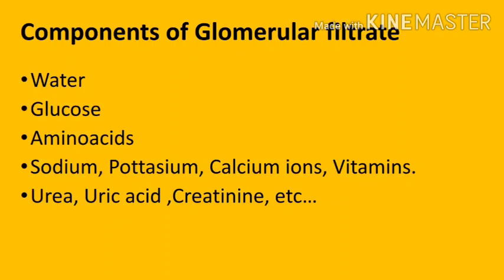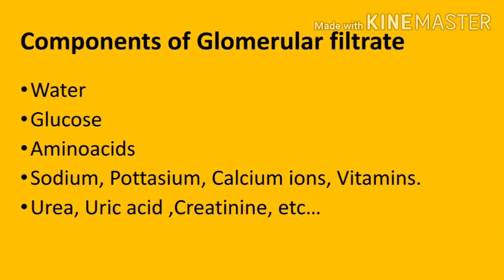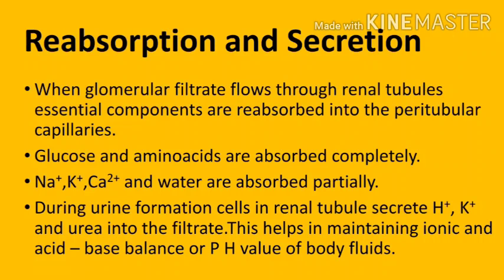Now let us see what are the components of glomerular filtrate. The second step in urine formation is reabsorption and secretion. When the glomerular filtrate flows through the renal tubules, essential components are reabsorbed into the peritubular capillaries. Glucose and amino acids are absorbed completely.